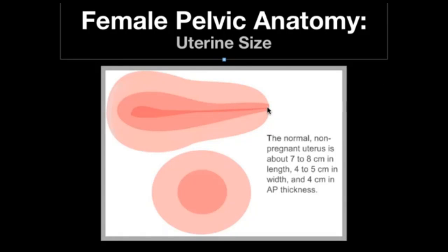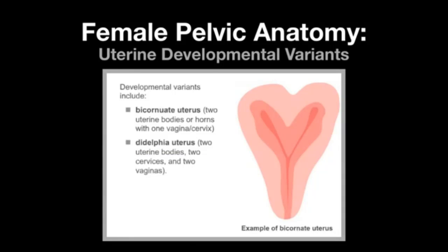The normal non-gravid uterus is about 7 to 8 centimeters in length, 4 to 5 centimeters in width, and about 4 centimeters in AP thickness. There are two uterine developmental variants to know: a bicornuate uterus, which has two uterine bodies or horns and one vagina and cervix, and a uterus didelphys, where there are two uterine bodies, two cervices, and two vaginas.